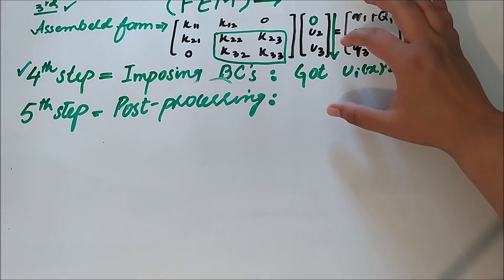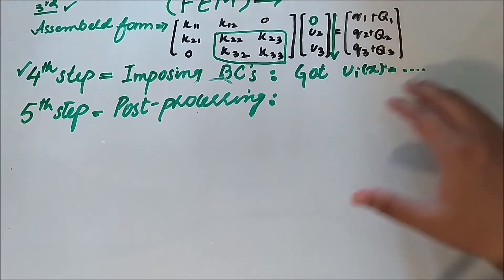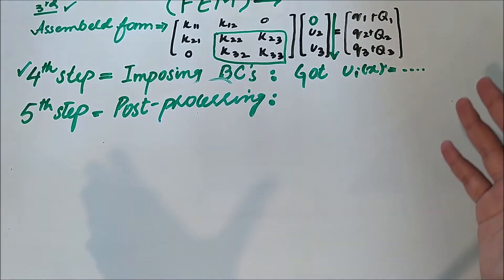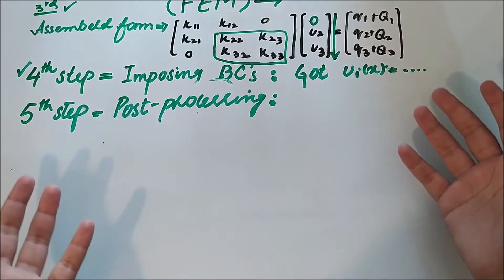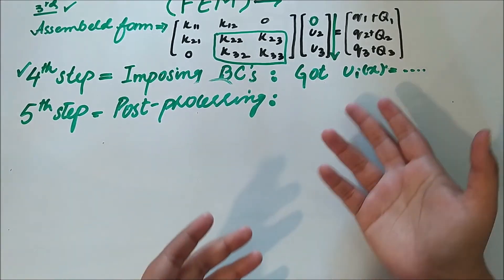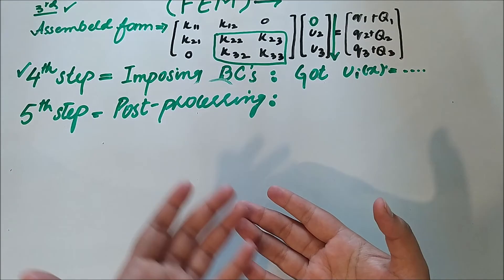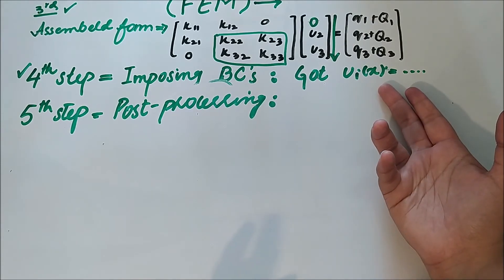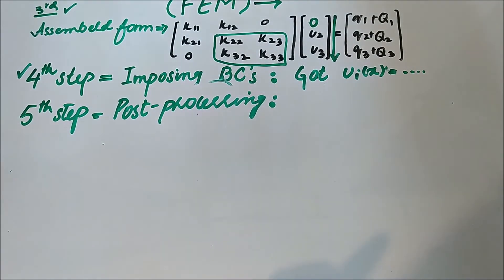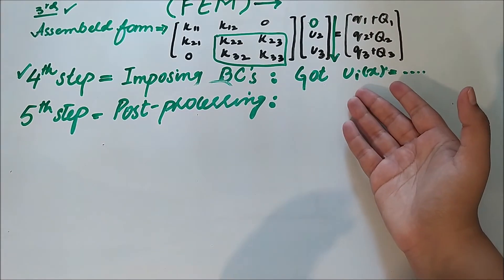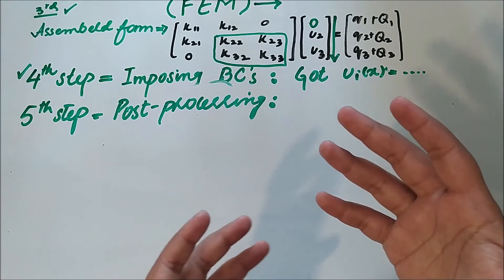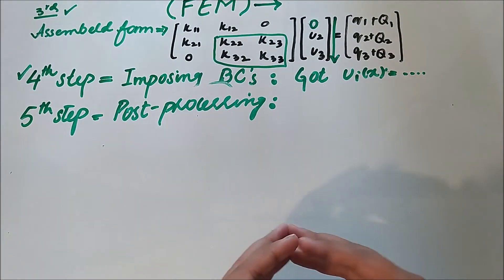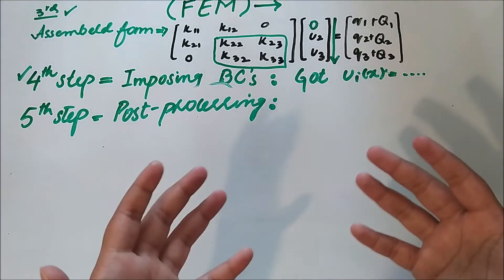In the fourth step we got the primary variables — the solution for the primary variables after solving the condensed form. The fifth step is known as post-processing, because we now have the basic primary variable solution. After imposing the boundary conditions and solving the condensed form, we get the primary solution. In post-processing we use these primary variables and the complete distribution to get other quantities we want — for example the gradient, stress, or strain of the system.